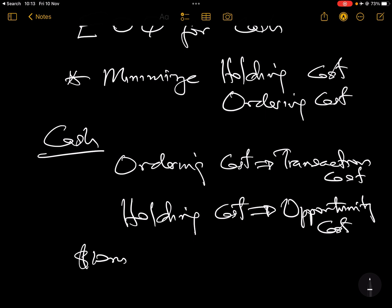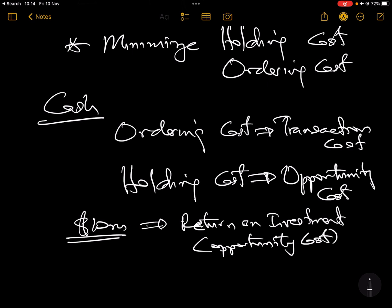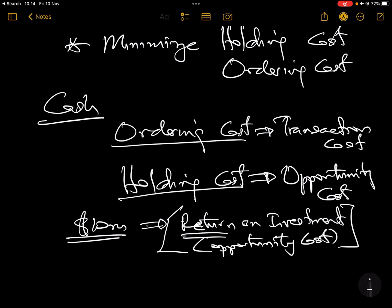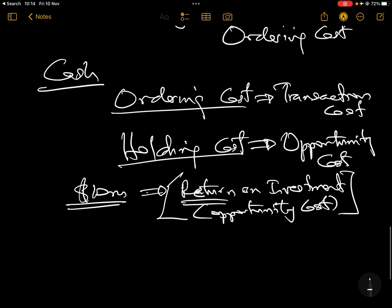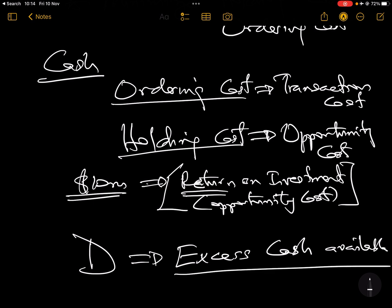What we used to call holding cost for inventory, we now call opportunity cost for cash. Opportunity cost means: if you hold ten million in cash and don't invest it, you lose the potential return on investment. You are keeping ten million in your bank account, not investing it, and by not investing you are losing the potential return you could have made. The 'D' in the formula is always your annual excess cash available in that year.